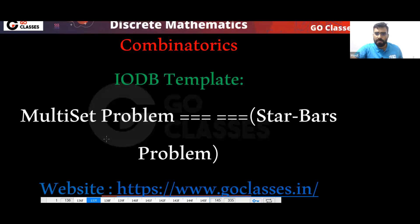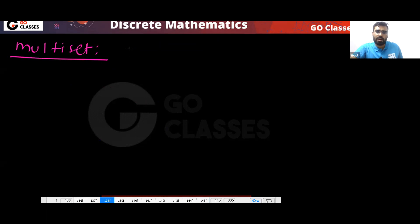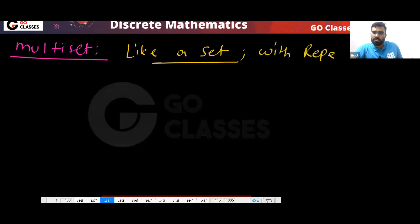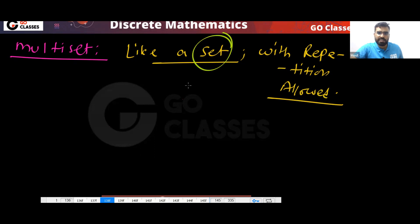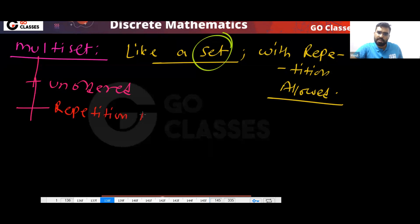Another template is the multi-set problem. What is a multi-set? A multi-set is like a set but with repetition allowed. Everything is the same as a set — it is unordered — but the only difference is that repetition is allowed.